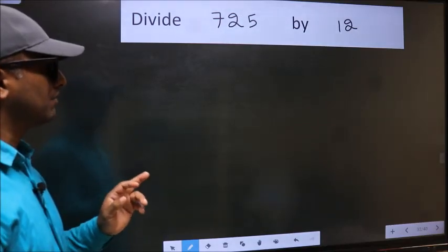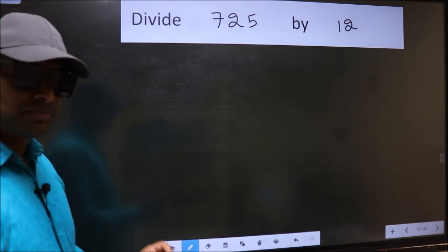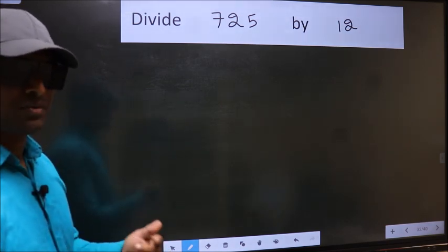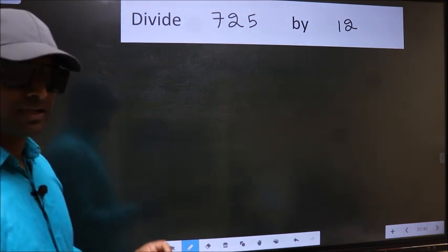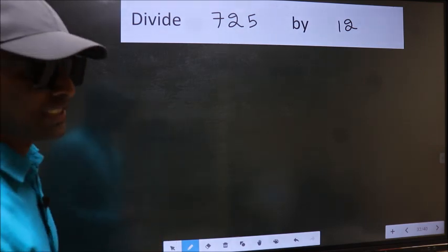Divide 7.25 by 12. While doing this division, many do this mistake. What is the mistake that they do? I will let you know. But before that, we should frame it in this way.